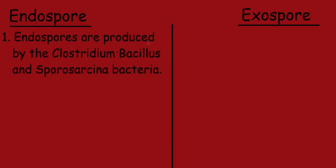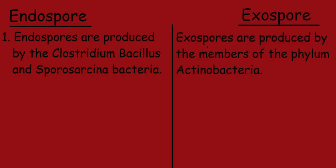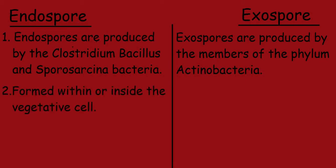Endospores are produced by the Clostridium, Bacillus, and Sporosarcina bacteria. For exospores, exospores are produced by the members of the phylum Actinobacteria.